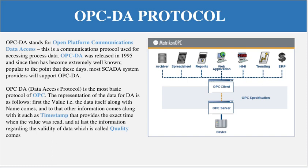Now, one of its types is OPC DA. The latest version is OPC UA, but the previous or older version was OPC DA. OPC DA stands for Open Platform Communication Data Access. This is the communication protocol used for accessing process data. It was released in 1995. OPC DA is the most basic protocol of the OPC family.